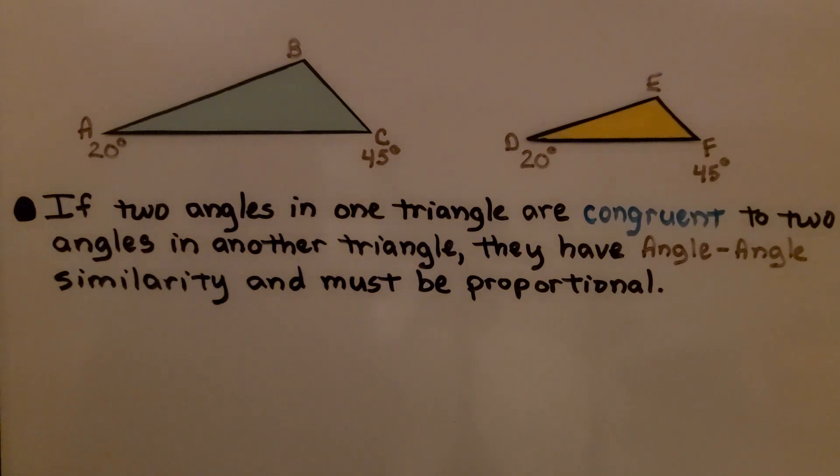If two angles in one triangle are congruent to two angles in another triangle, they have angle-angle similarity and must be proportional. For angle A, it's 20 degrees.